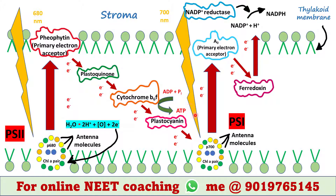Similarly, PS1 absorbs sunlight of 700 nanometer wavelength, gets excited, and loses two electrons which are first received by the primary electron acceptor A0. The A0 molecule releases the pair of electrons, which is received by ferredoxin. Ferredoxin releases them, which along with NADP+ and H+ molecules generate NADPH in the stroma.